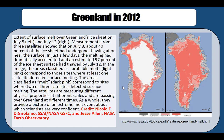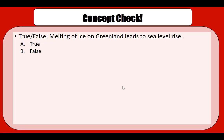Quick concept check: does melting of ice on Greenland lead to sea level rise — true or false? True. The reason is that the ice is on land, not on the ocean, so when it melts it does lead to sea level rise. Thank you for listening, and till next time.